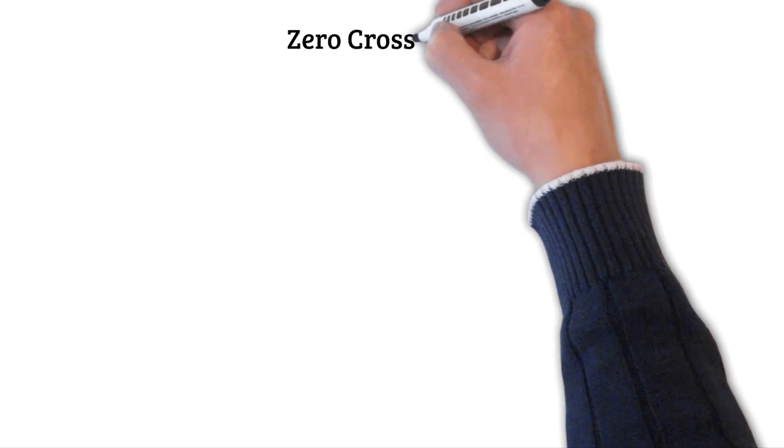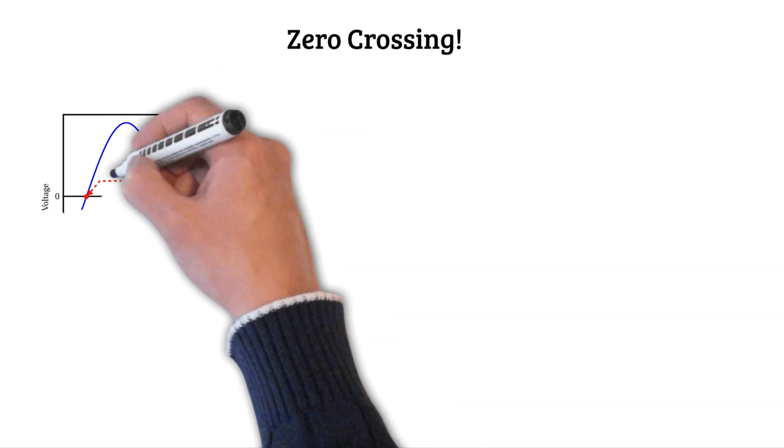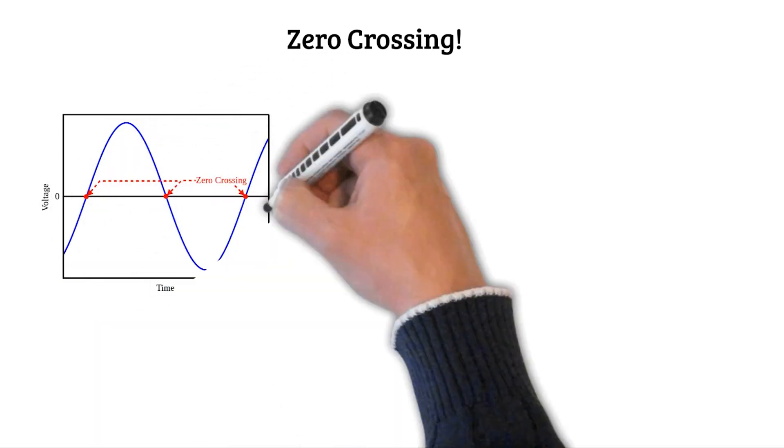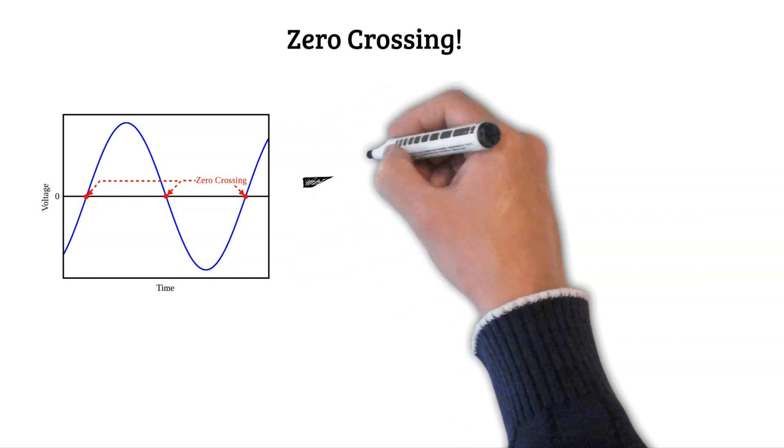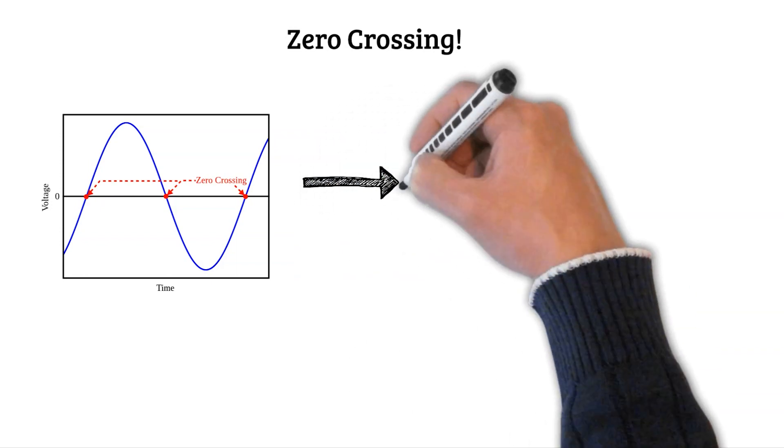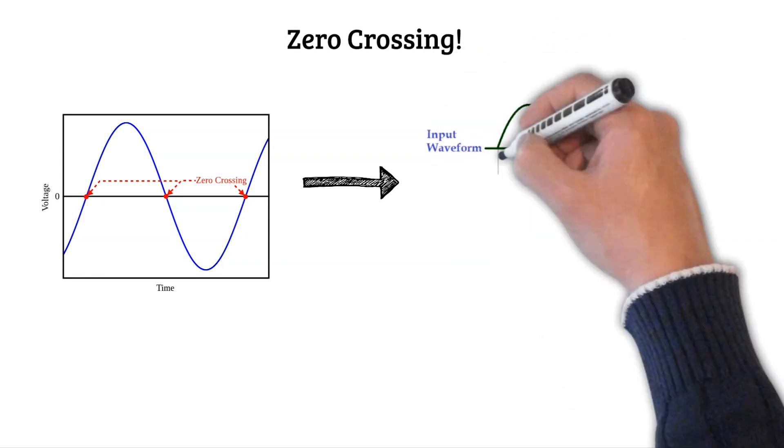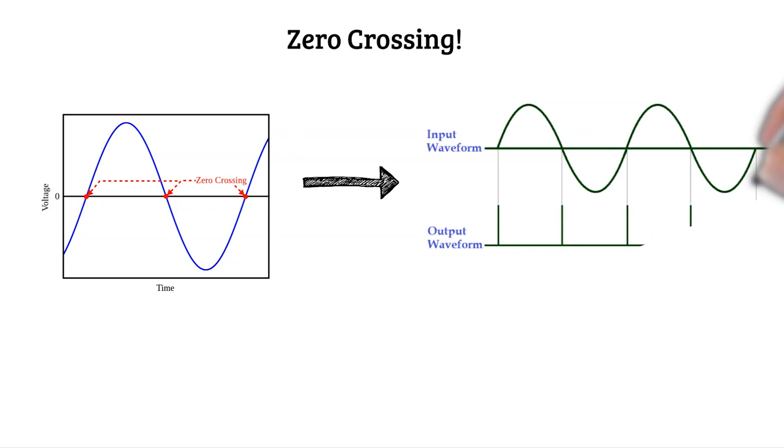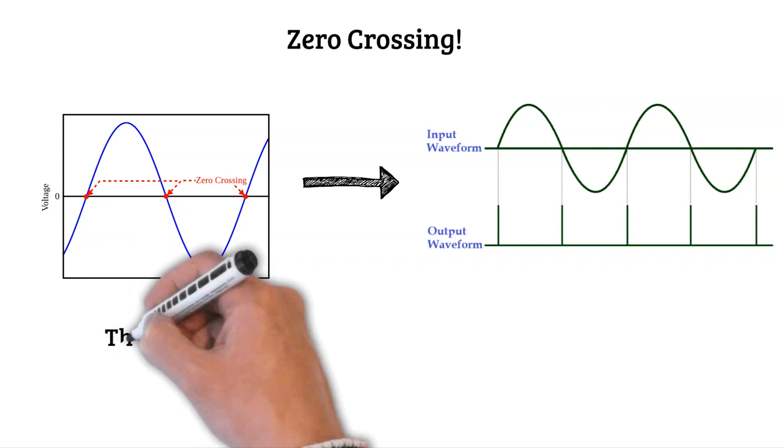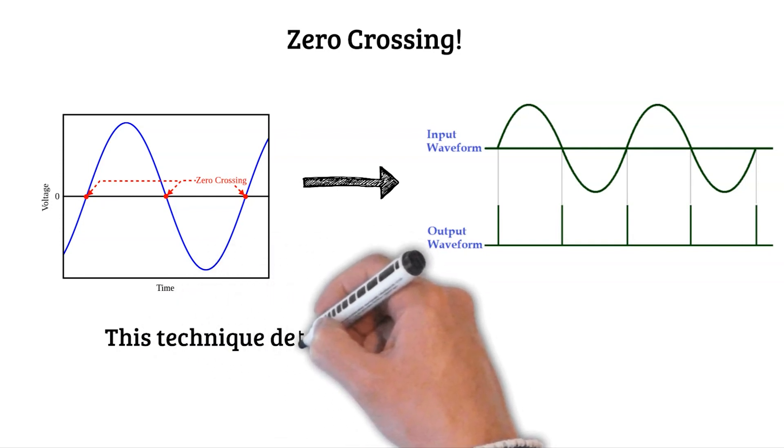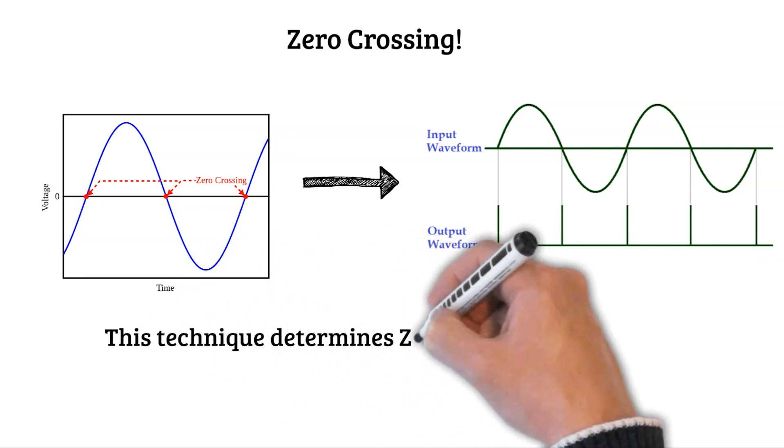What is zero crossing technique? You imagine you have one AC voltage like this, and you want to detect any zero point in these signals and you make pulses or triggers. Usually the zero crossing is working in the triac triggers. These techniques determine zero points in AC voltage.